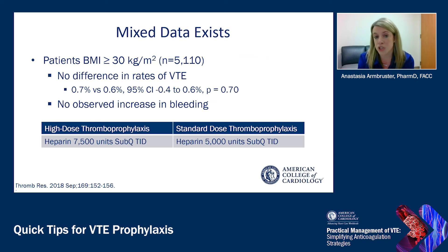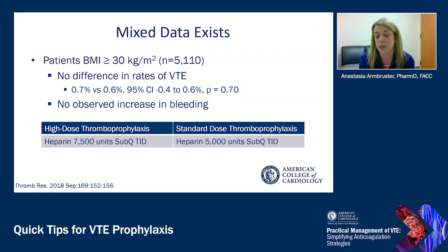Another larger study of over 5,000 patients looked at patients with a BMI of 30 or greater and saw no difference in rates of VTE. High-dose thromboprophylaxis was defined as 7,500 units TID compared to 5,000 units TID; BID dosing of heparin 5,000 was not allowed. They also observed no increased rates in bleeding, which was positive.